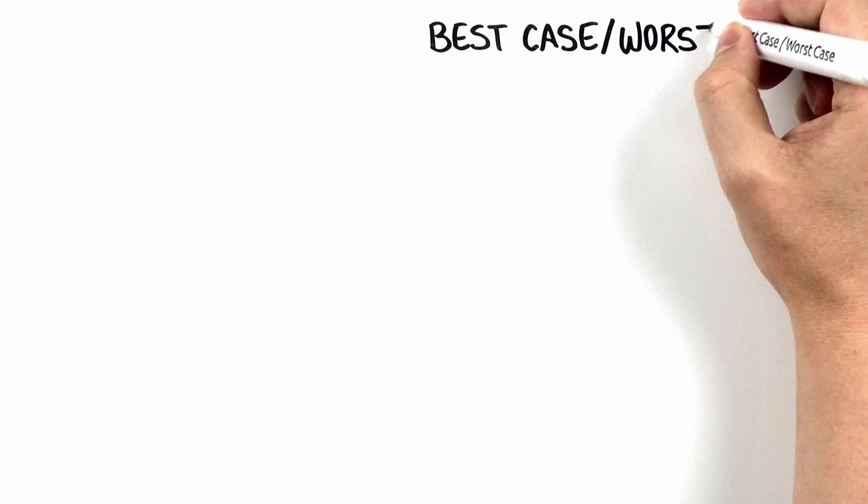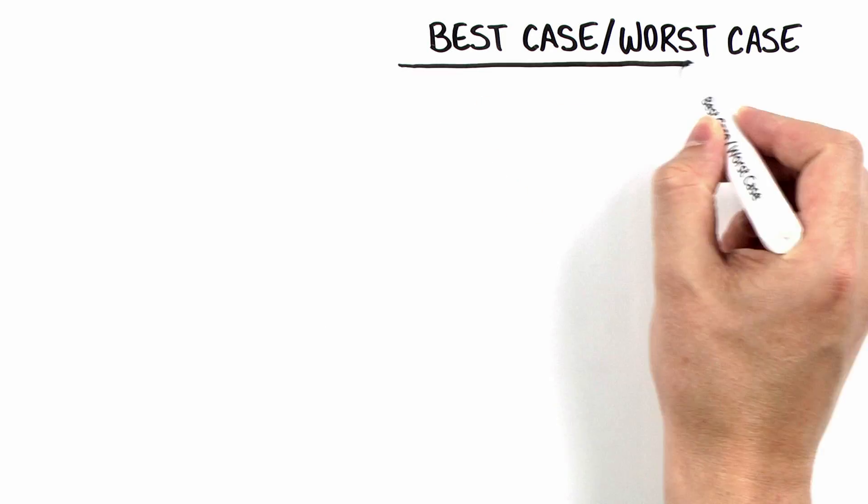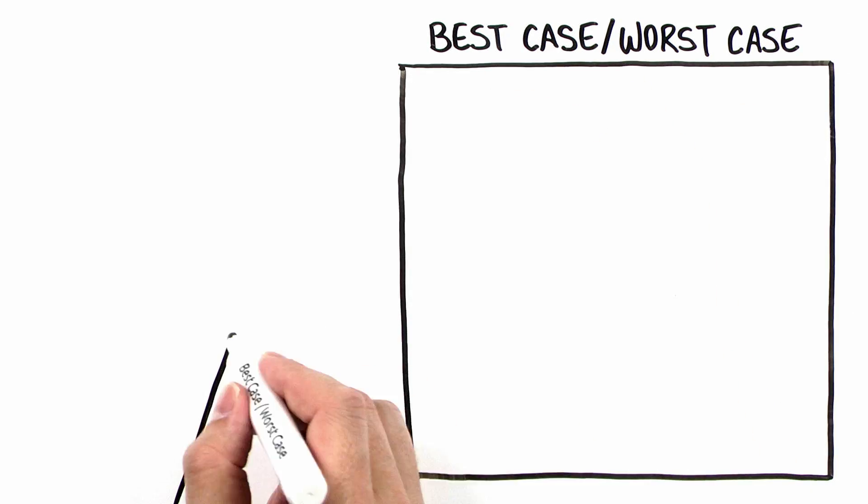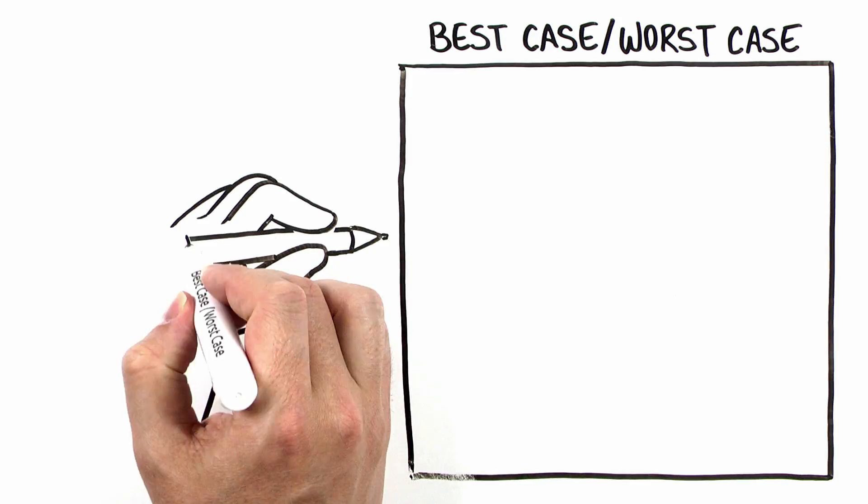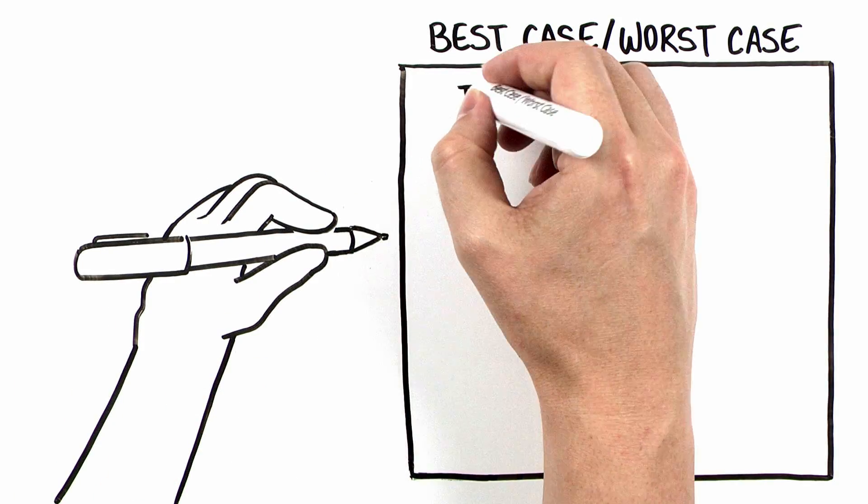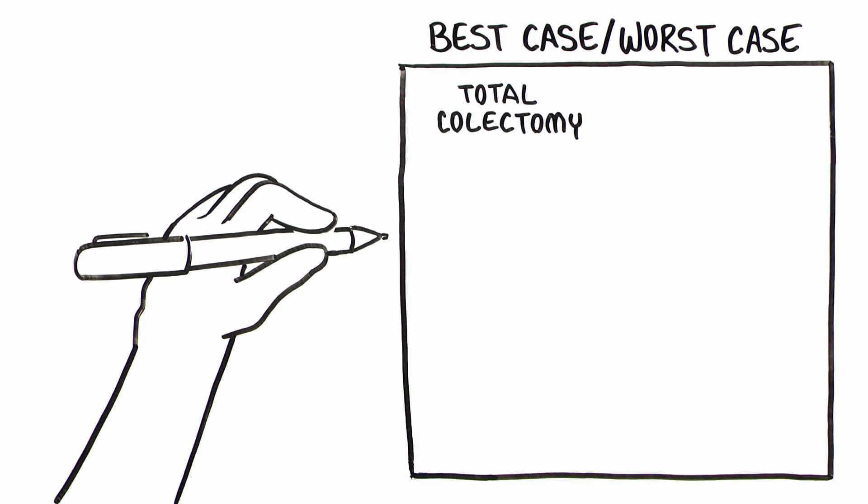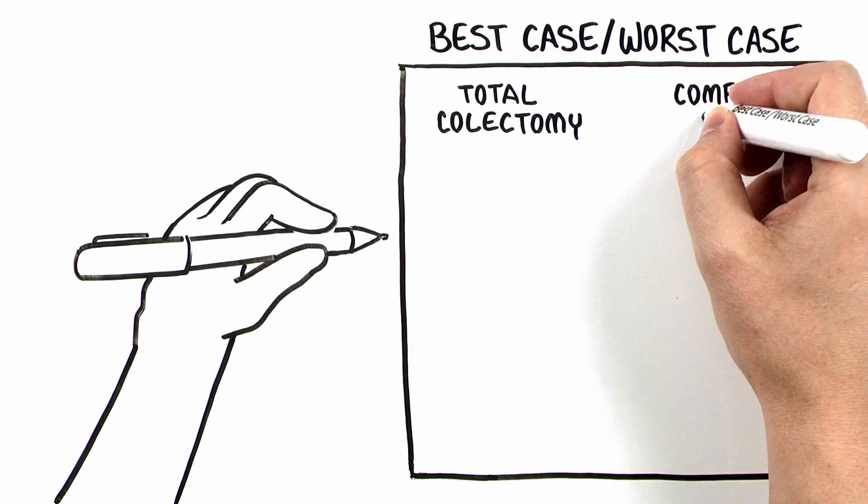Next, introduce the best case, worst case framework. Let's look at the graphic aid. To begin, identify which options you will present. In Mr. Lombardi's case, you're presenting two options, total colectomy, and a non-surgical option, comfort care.